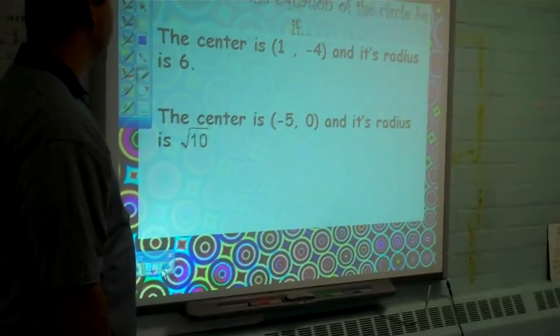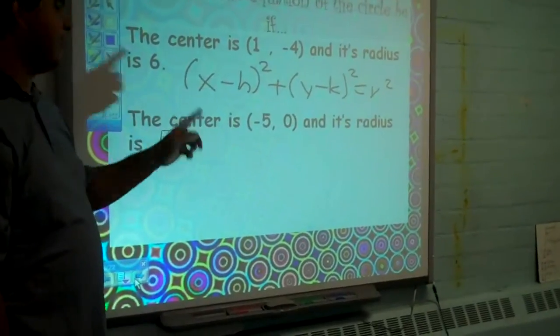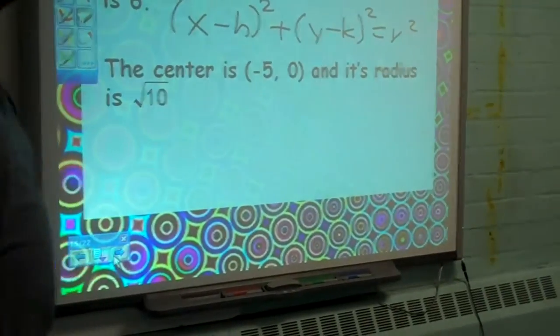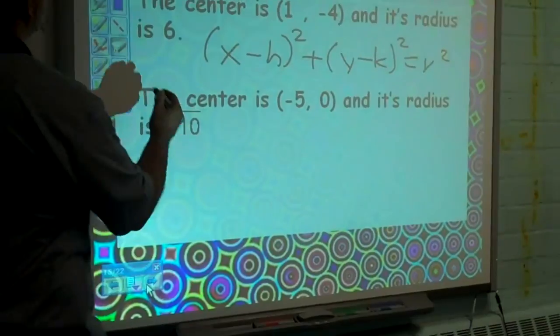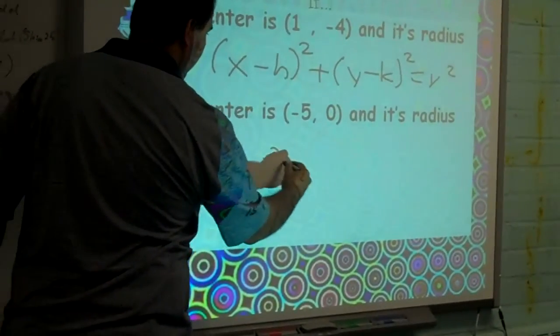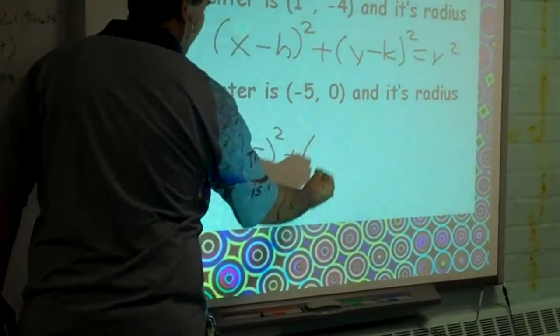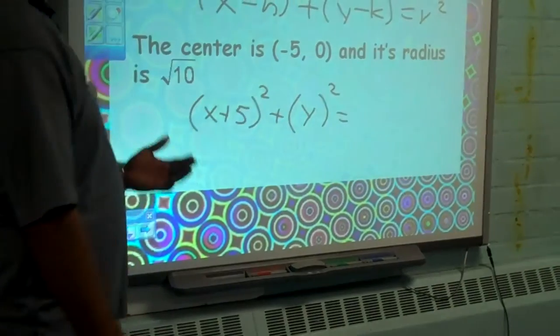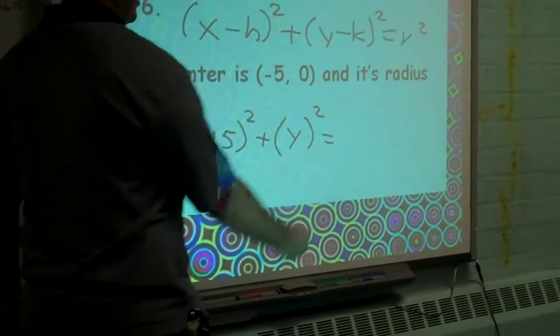What would be the equation of a circle whose center is negative 5, 0 and whose radius is square root of 10? X plus 5 all squared plus Y minus 0 squared, so that's going to be 0, equals 10. Square root of 10 squared, which is just 10.